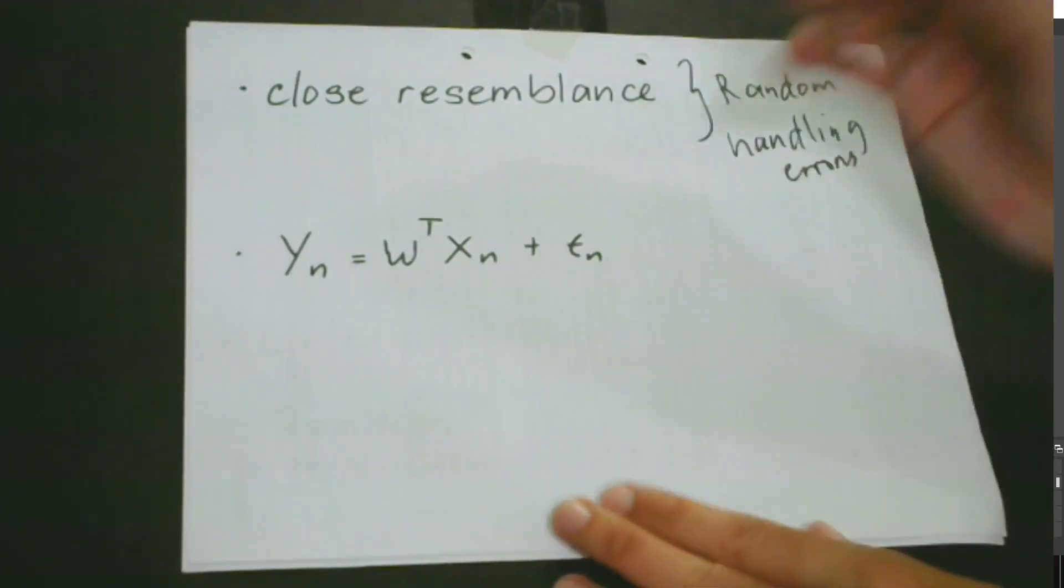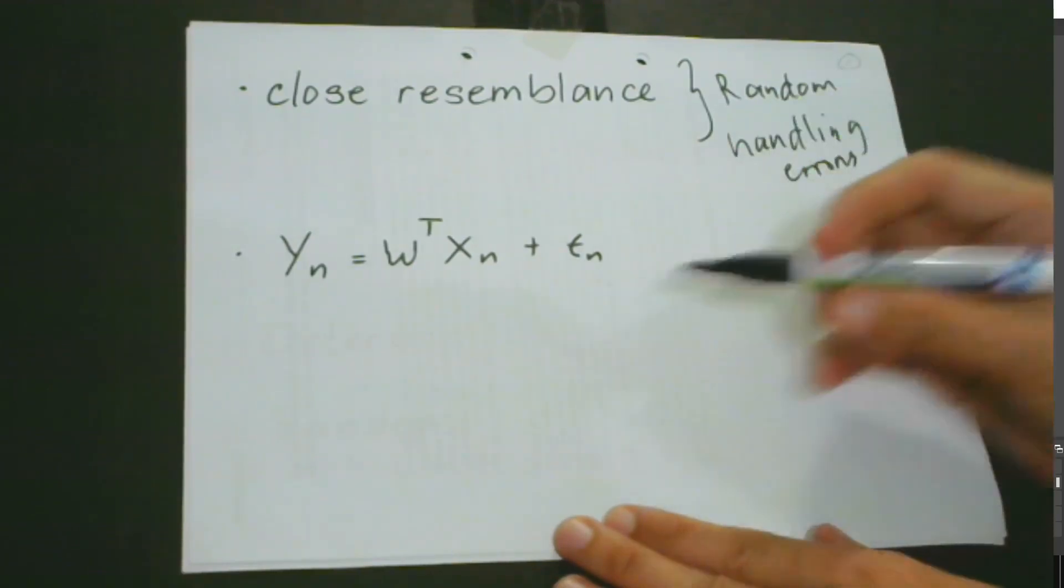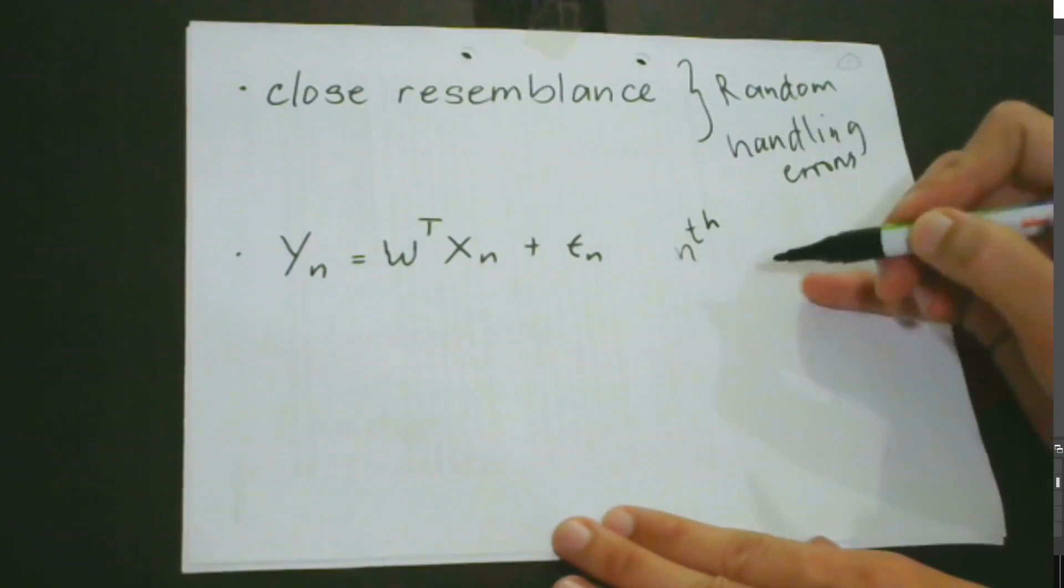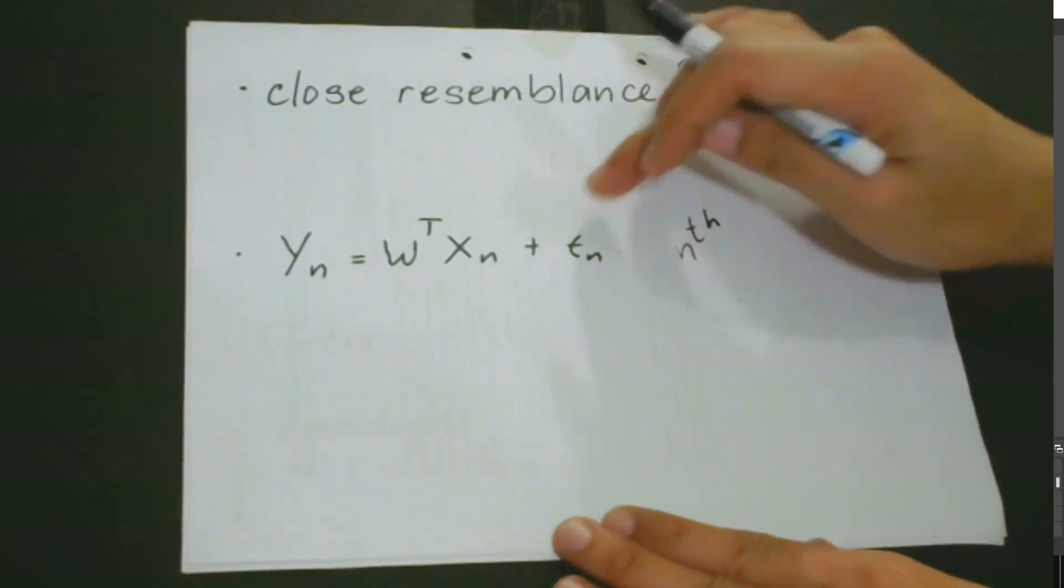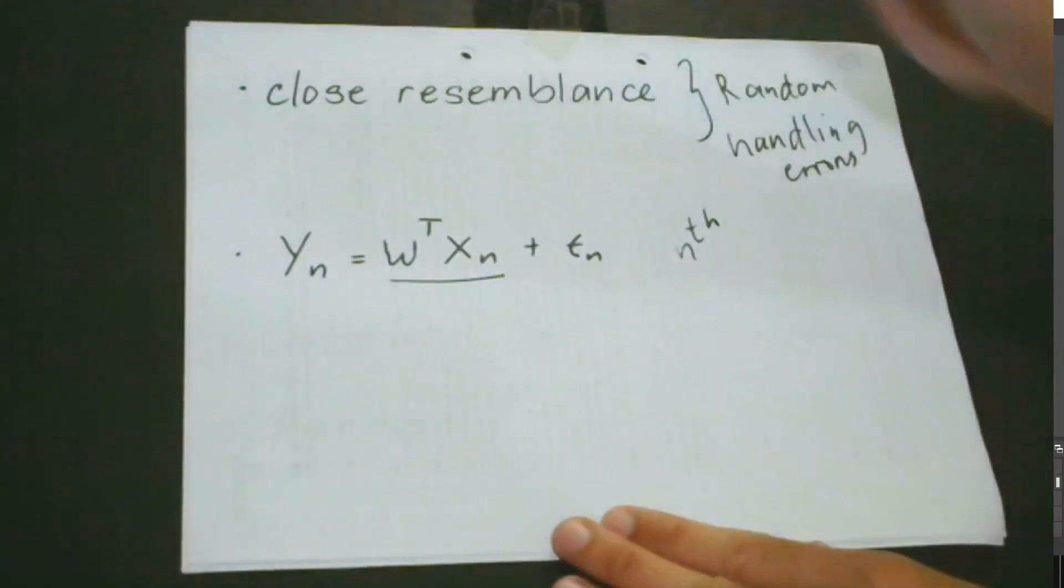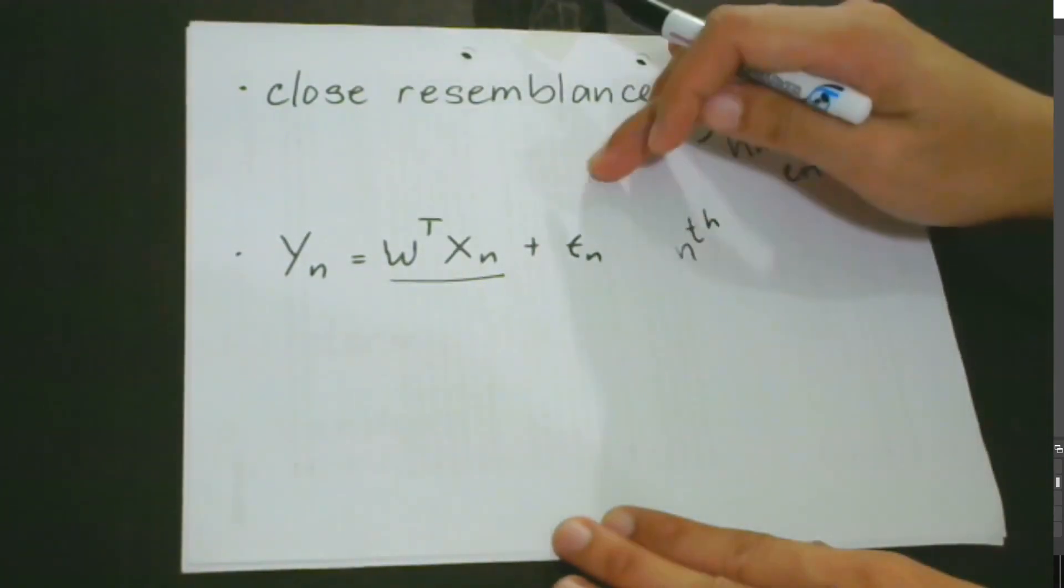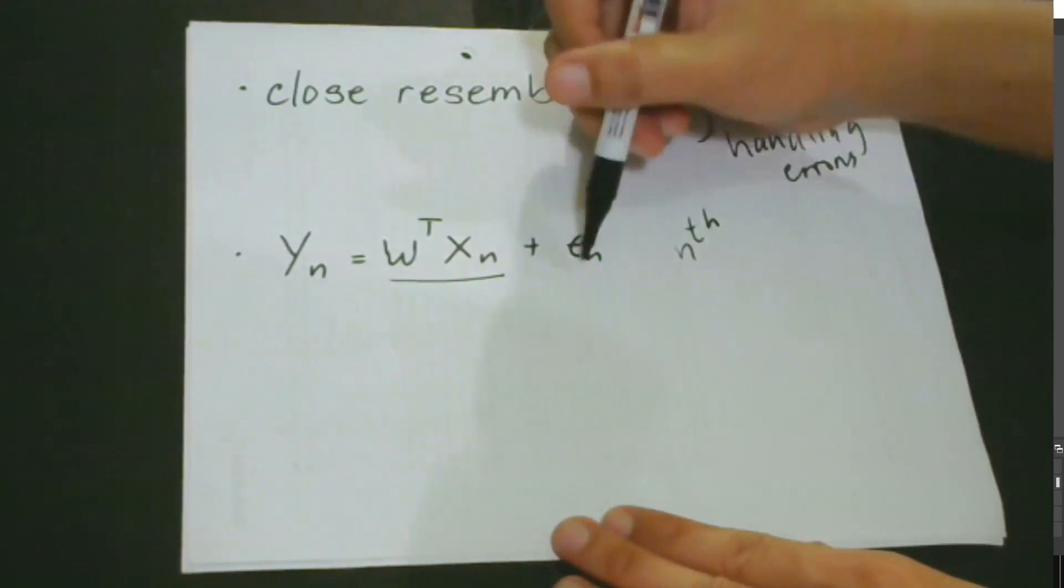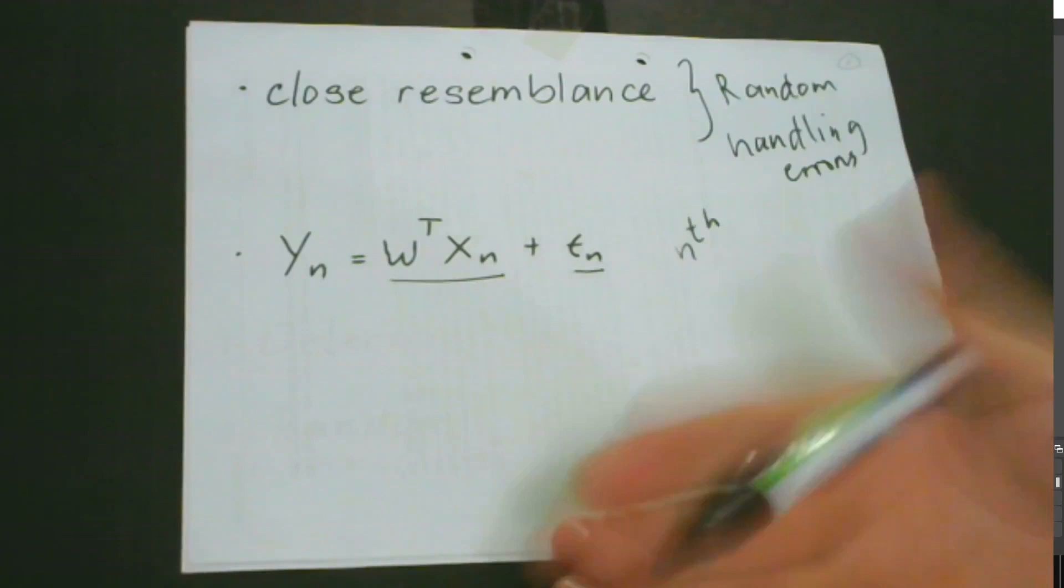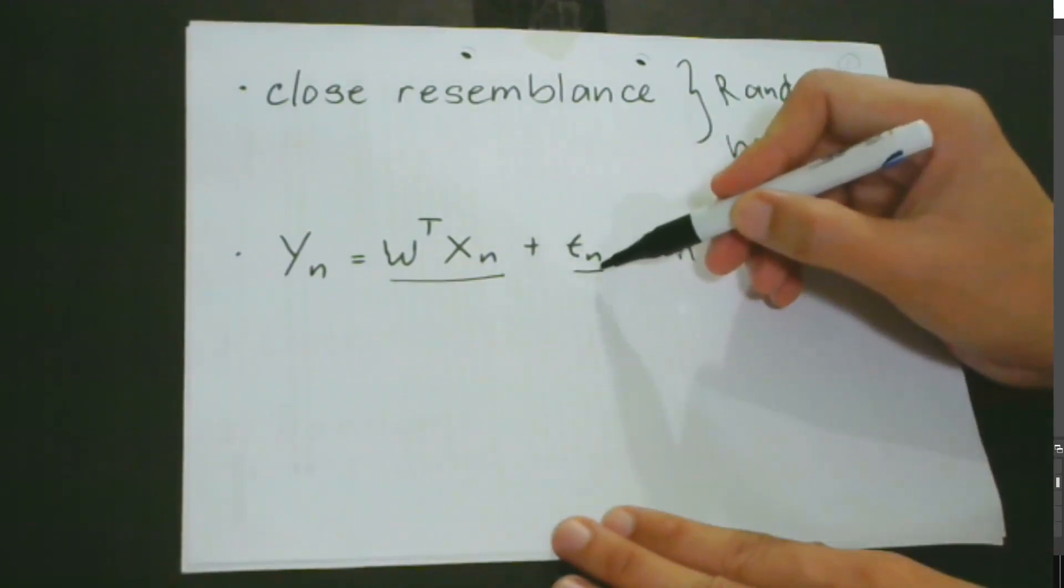What we're considering in our model is generating the nth sales performance from this function. So as you could see here, we have added this one. We've added a random variable, and in our last lesson we said that this one represents our error.